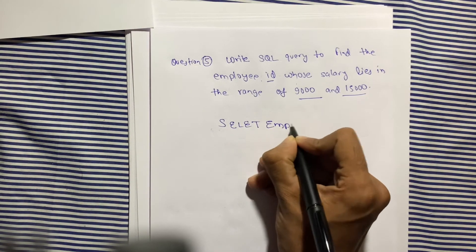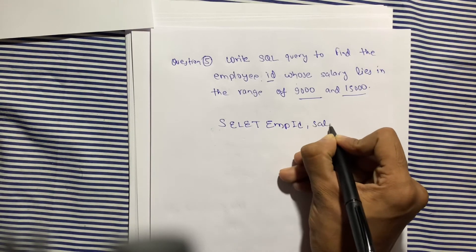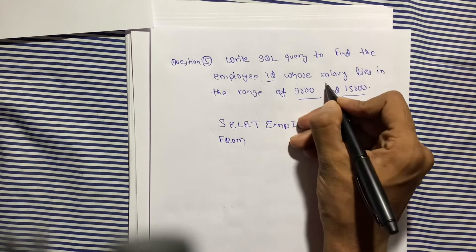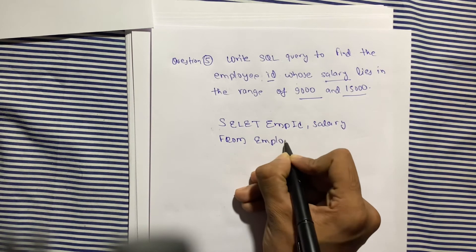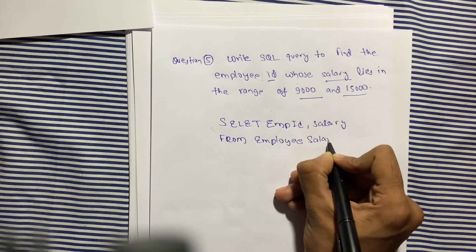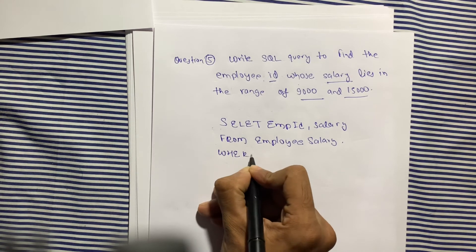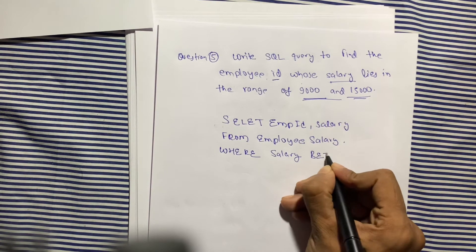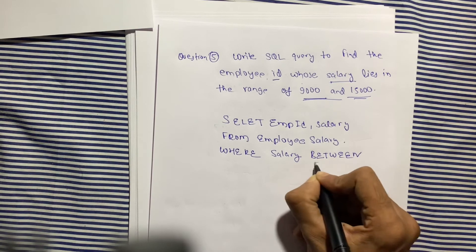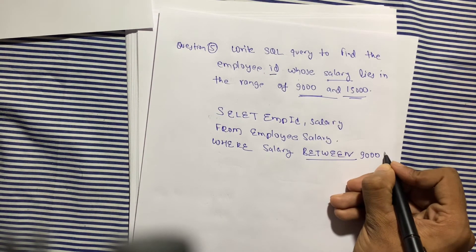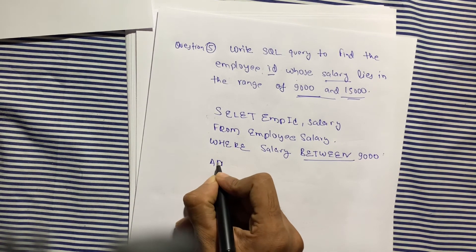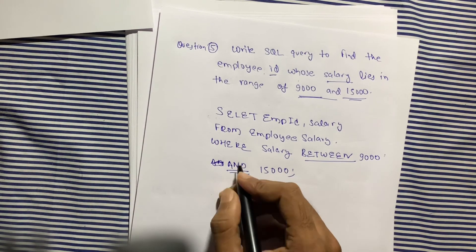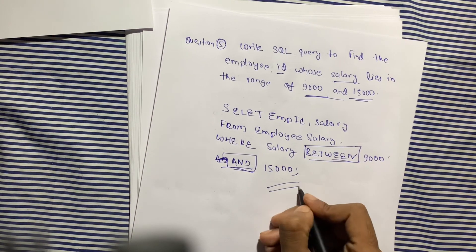The query is: SELECT employee_id, salary FROM employee_salary WHERE salary BETWEEN 9000 AND 15000. These are the five questions — make sure you subscribe.